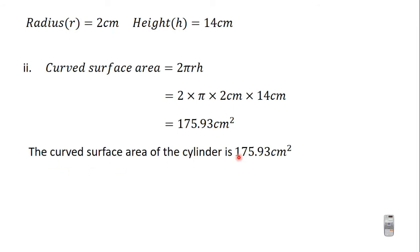The curved surface area of the cylinder is 175.93 cm². If you want to learn how to correct your answer to a given decimal place, watch the video on approximations — I explained how to do that there.